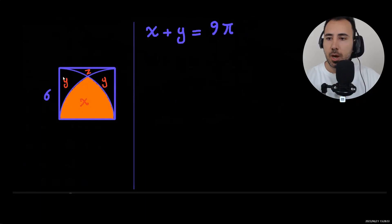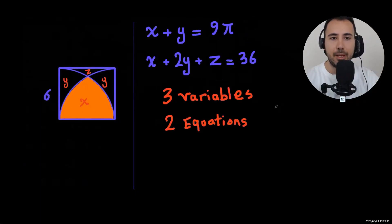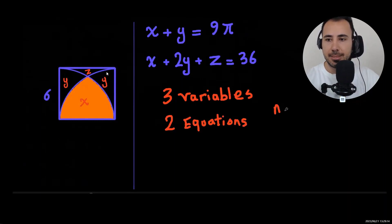So if this is y, this is also y by symmetry. So this is z. So x plus 2y plus z is the square, and the area of the square is 36. That will give us the second equation. Now is that enough? The answer is these two equations are not enough. With these two, you cannot answer this question because we have three variables and only two equations.